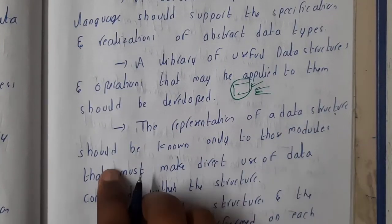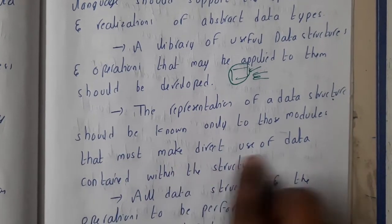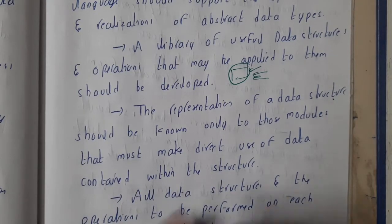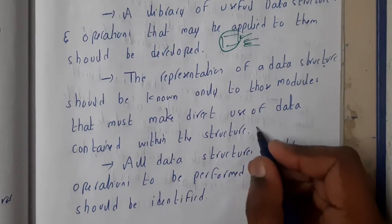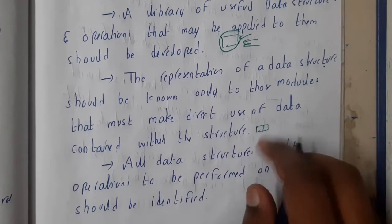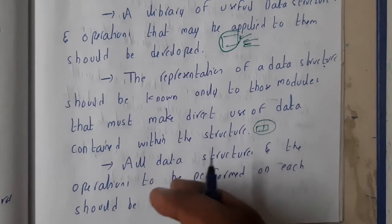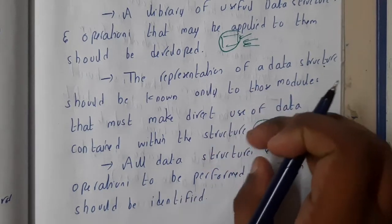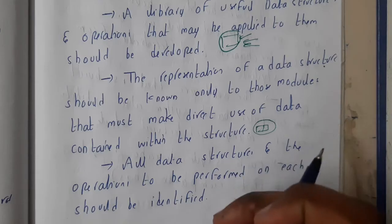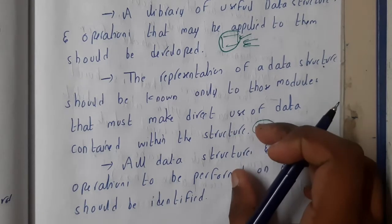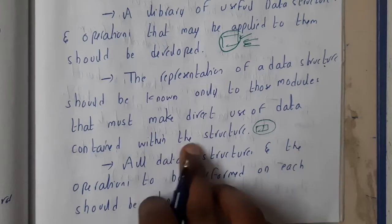The representation of a data structure should be known only to those modules that must make direct use of it. For example, if you write a linked list program, that node structure should be known only to the modules operating on it. If you have a combined program for sorting and a linked list, sorting does not need to know about the linked list, and vice versa — they belong to one program but are independent of each other.